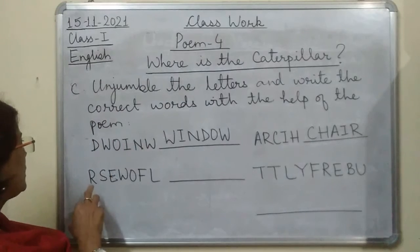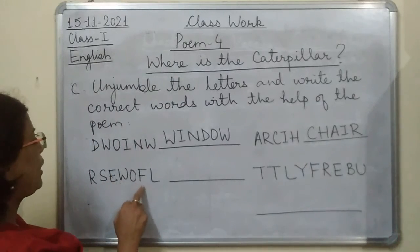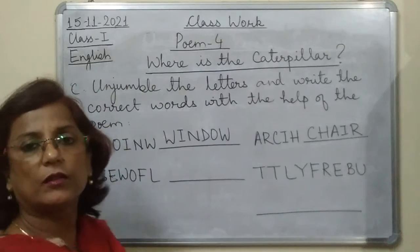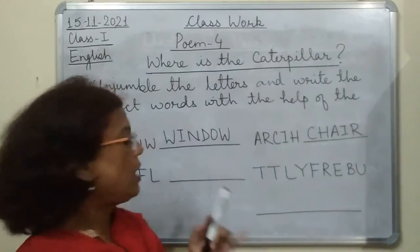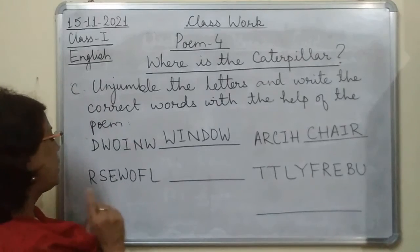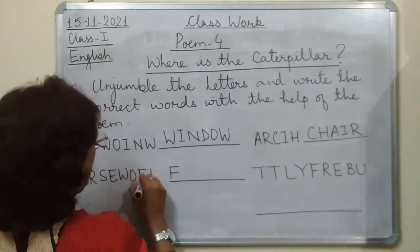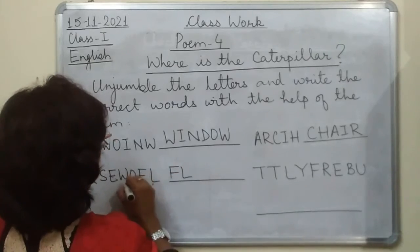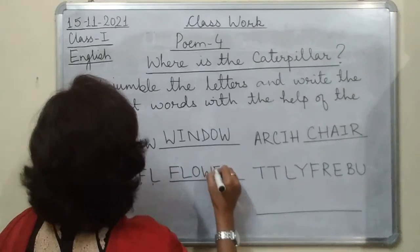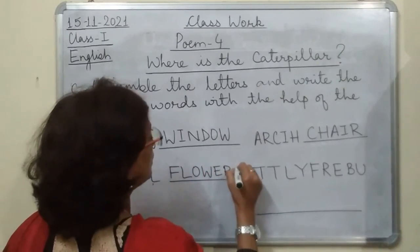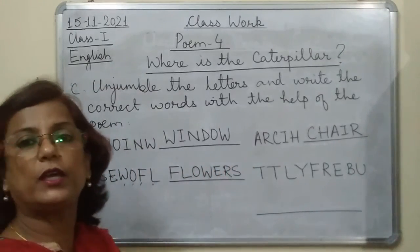Then the third word. The letters are R, S, E, W, O, F, L — that means the word has seven letters. Can you make out what this word could be? The correct word is F, L, O, W, E, R, S — 'flowers.'